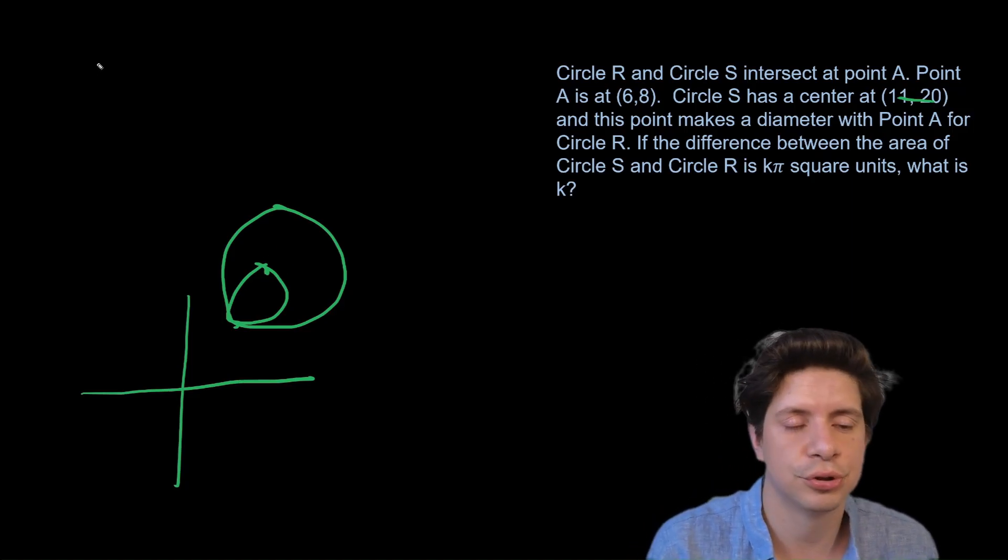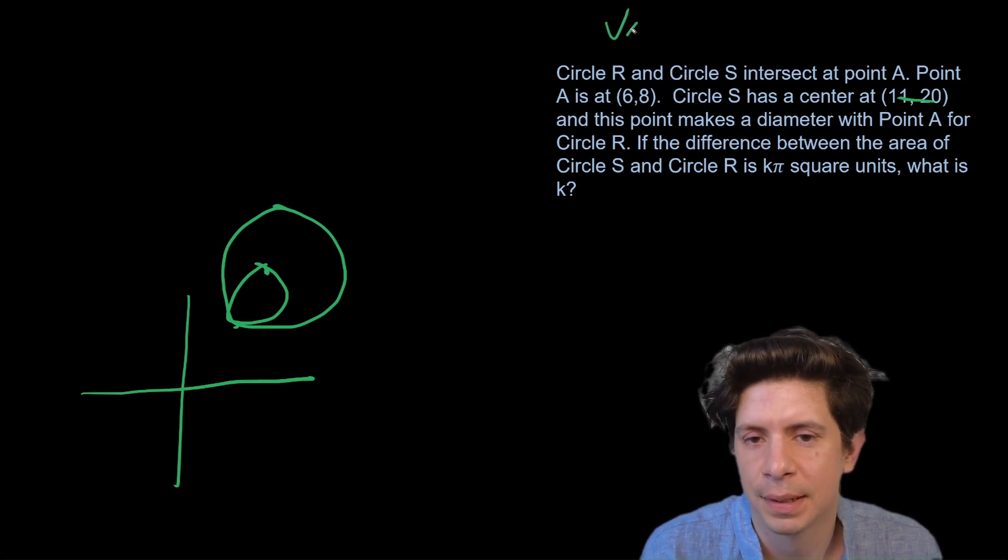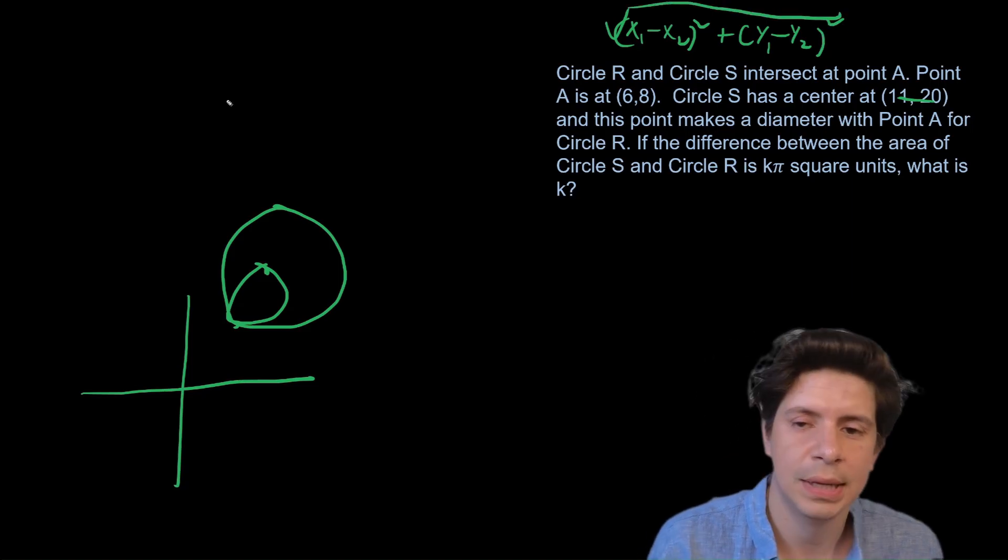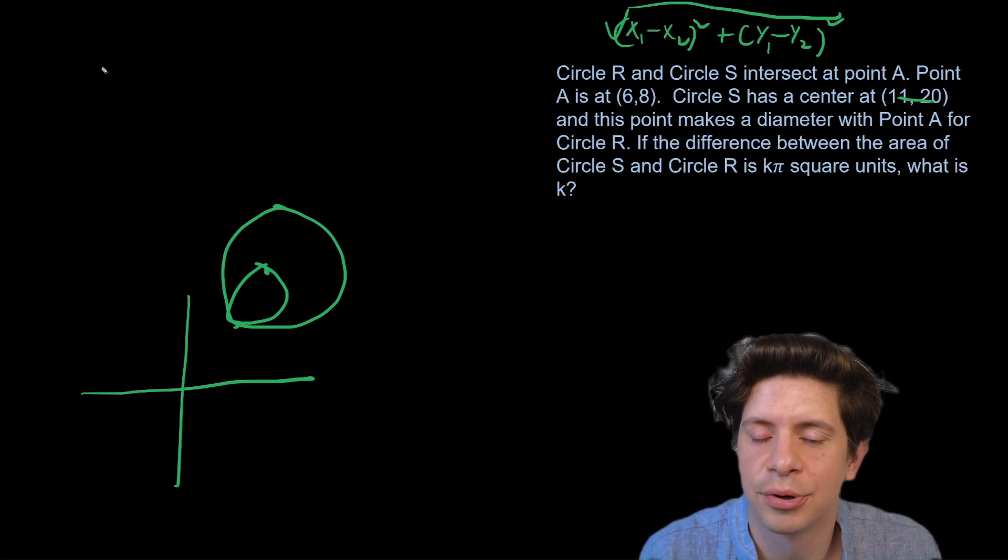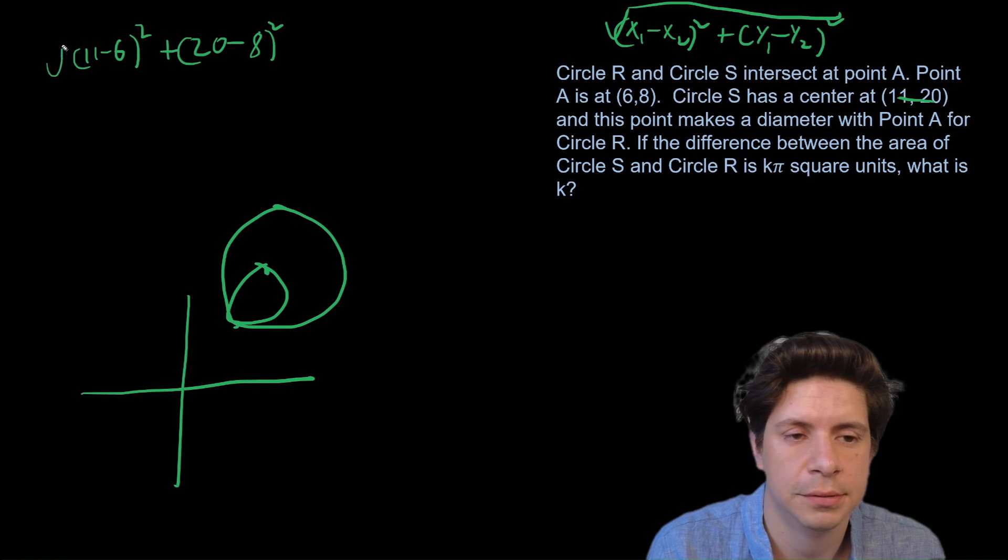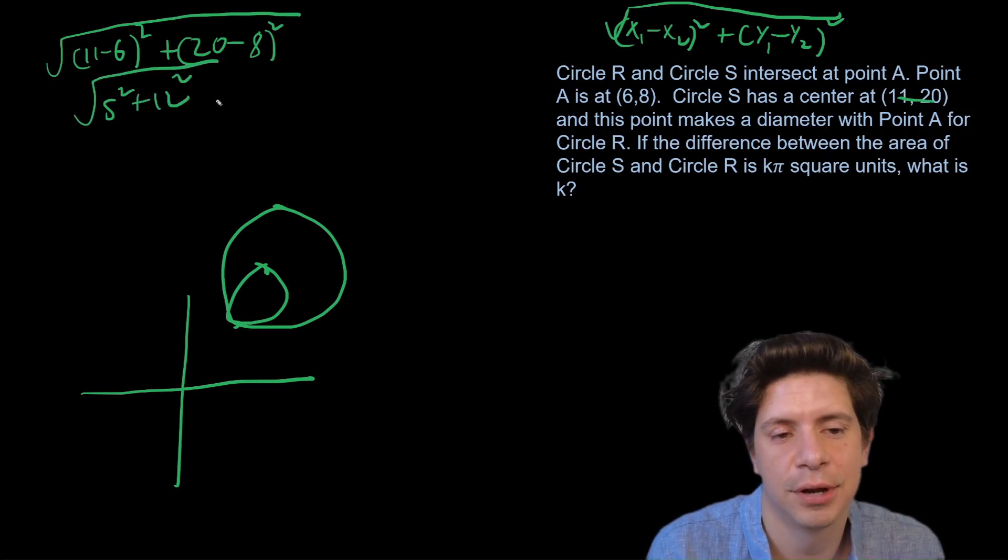So the radius we find through distance formula. So let's do distance formula and then we will do half of that for Circle R. Distance formula is x1 minus x2 in parentheses squared plus y1 minus y2 in parentheses squared. It's derived from Pythagorean theorem. So we're going to do 11 minus 6 squared plus 20 minus 8 squared.